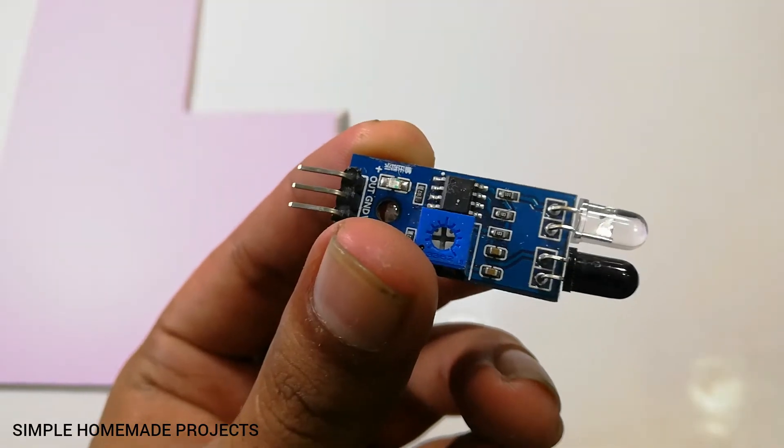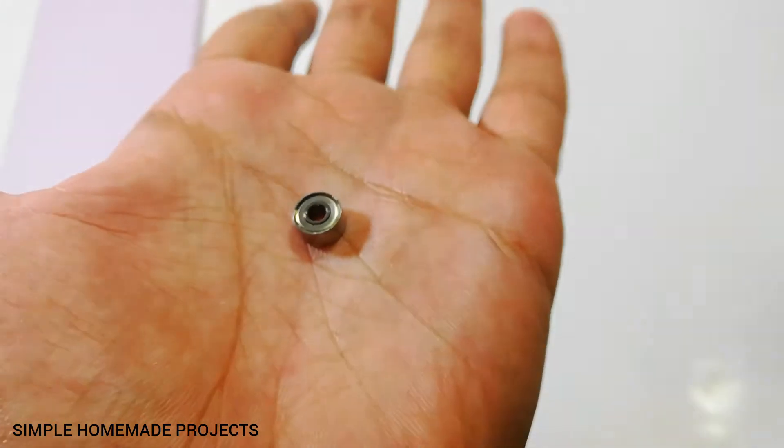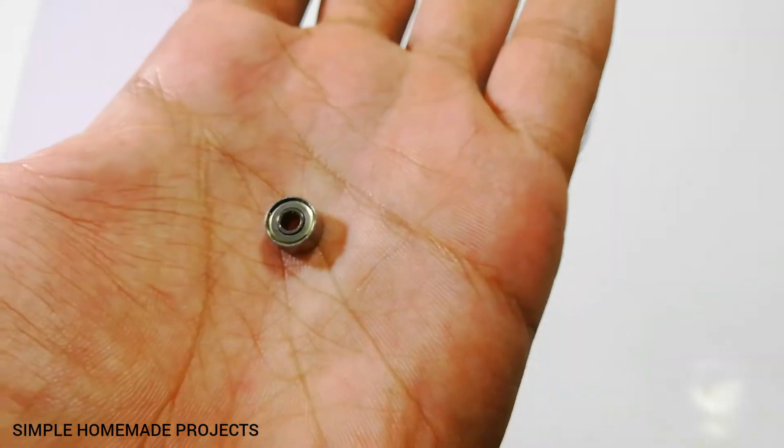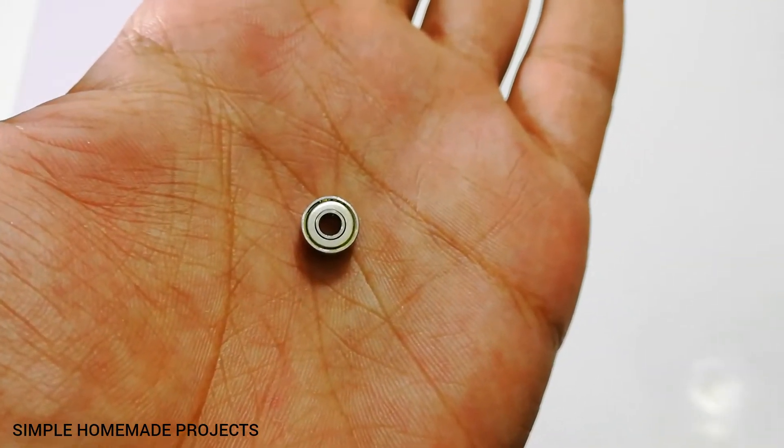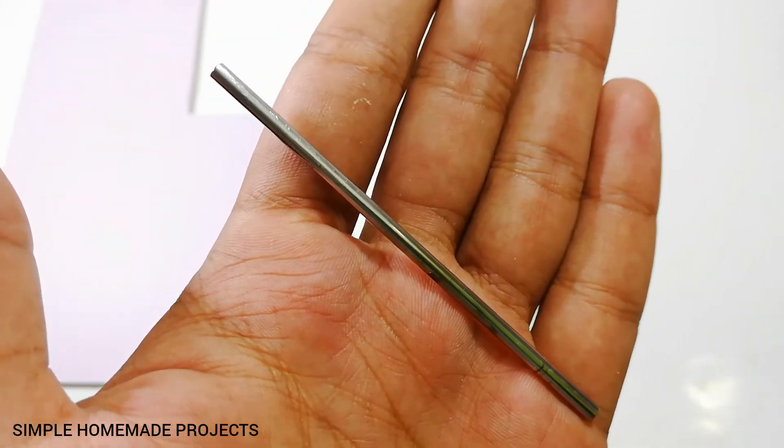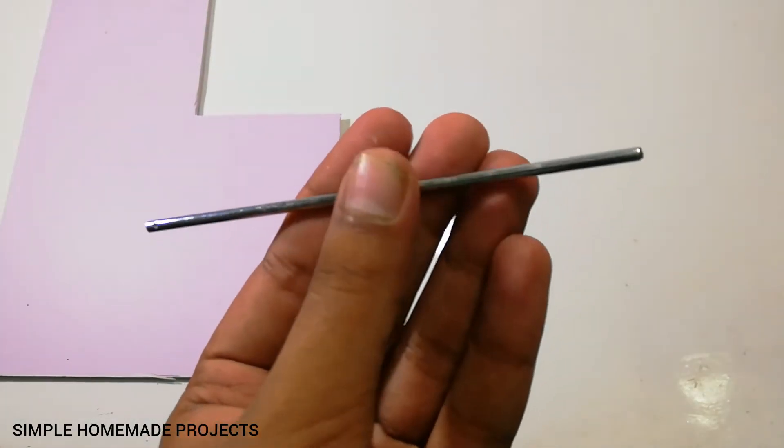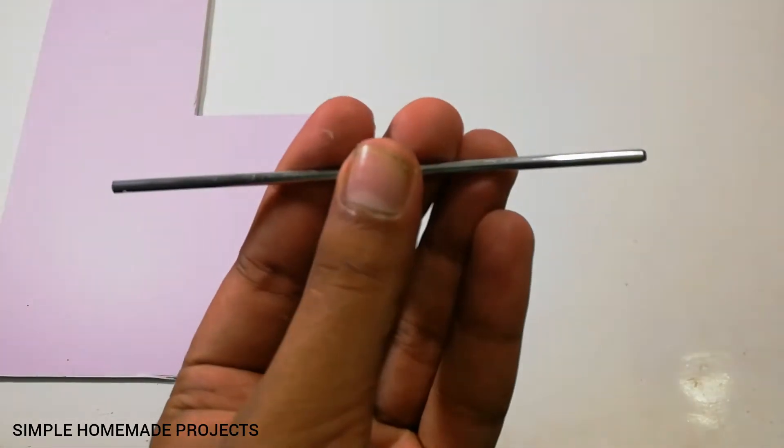We also need an infrared proximity sensor, a small bearing (this bearing can be obtained from an old PC cooling fan), a steel shaft with a diameter equal to the inner diameter of the bearing, a piece of metal tube, and PVC foam board sheet.